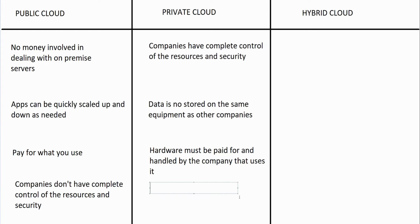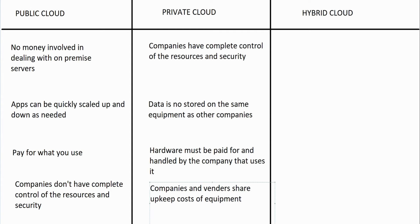Companies and vendors share the upkeep cost of equipment. For example, you might use a private cloud vendor and pay for equipment that's in their data center — it could be 100% yours, but they supply the people to manage it. They pay for the employees managing the equipment and the infrastructure it sits on, such as server racks, which is why companies and vendors share upkeep costs.